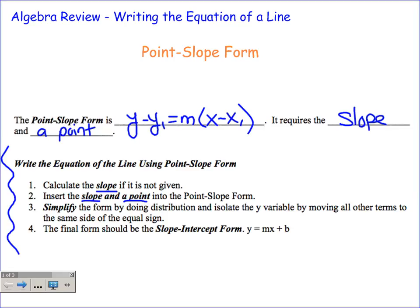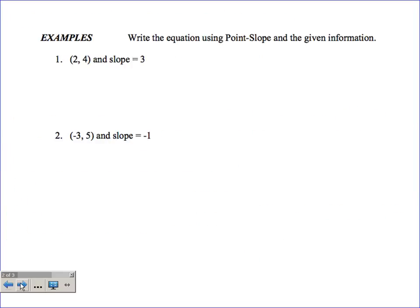We'll simplify the form by doing the distribution property and we'll then isolate the y by moving all other terms to the same side of the equal sign. This will finally put this into slope-intercept form, y equals mx plus b, basically solving for y. This may sound complicated now, but it's really not too bad.